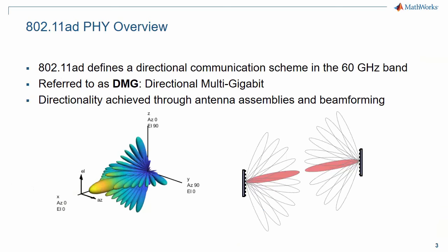802.11AD is a directional communication scheme. Within the standard documents, it is referred to as DMG, which is the terminology we use within wireless LAN system toolbox. To overcome the large path loss at 60 GHz, directionality is required. This is achieved using antenna assemblies such as phased arrays and beam steering at the transmitter and receiver.